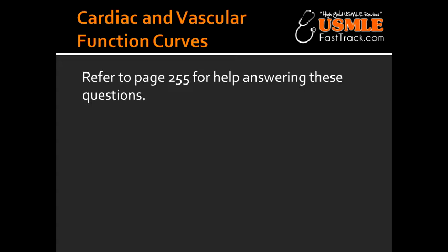What does number 2 represent in this picture? Number 2 represents a decrease in total peripheral resistance. This happens in exercise and an AV shunt, and this results in positive inotropy as well as an increase in blood volume. There is also a higher cardiac output as well as a higher end diastolic volume.